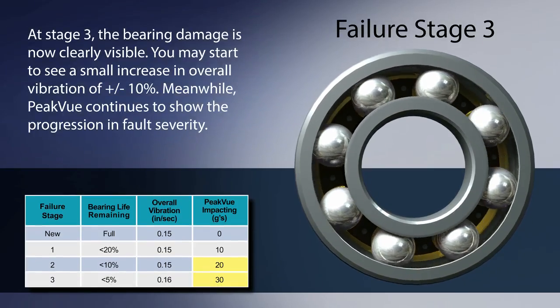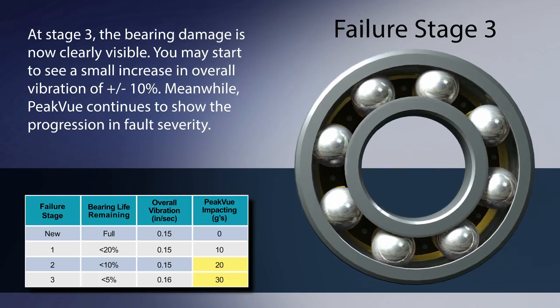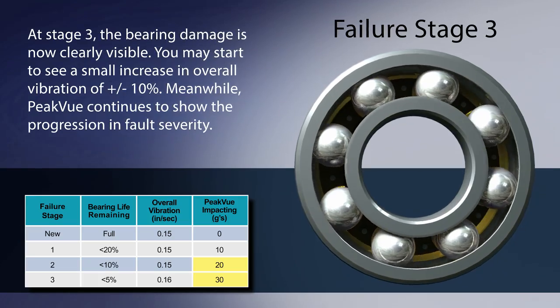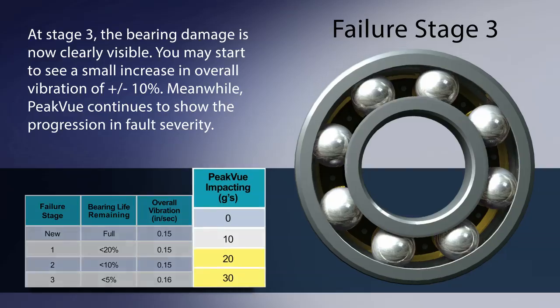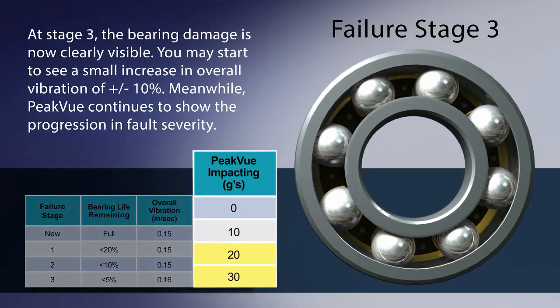At stage three, the bearing damage is now clearly visible. You may start to see a small increase in overall vibration of plus or minus 10%. Meanwhile, peak view continues to show the progression of fault severity.